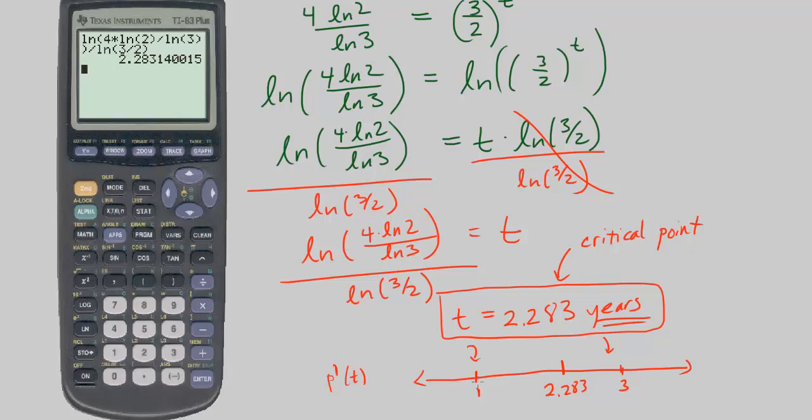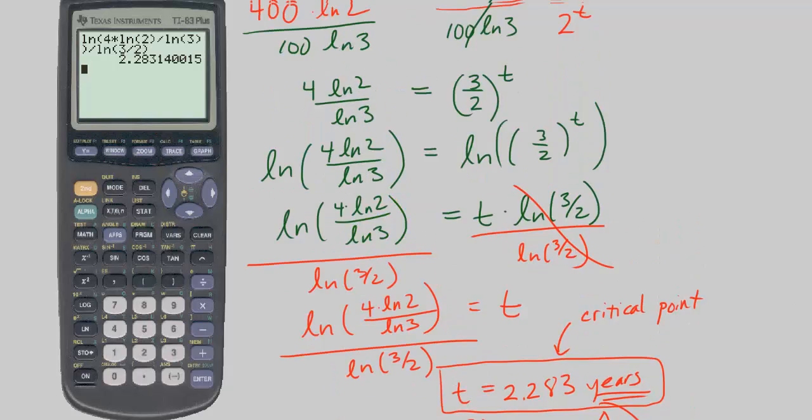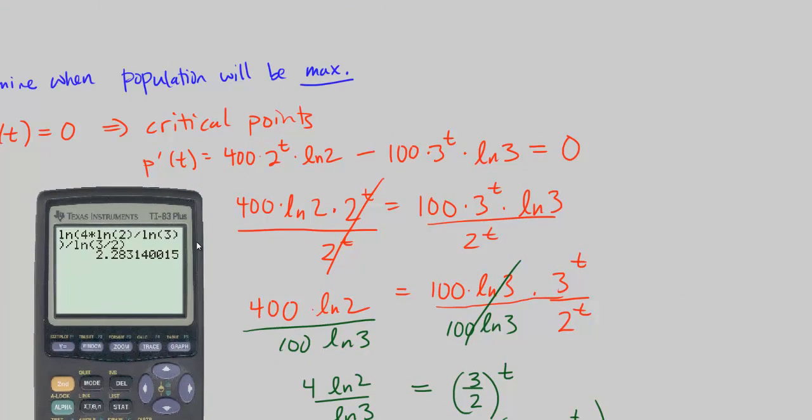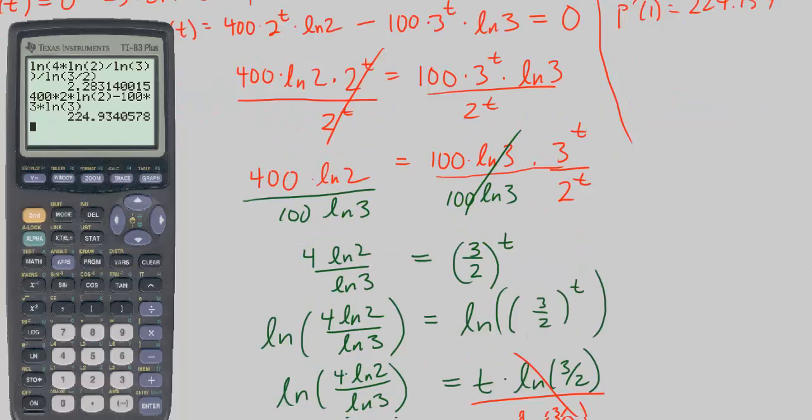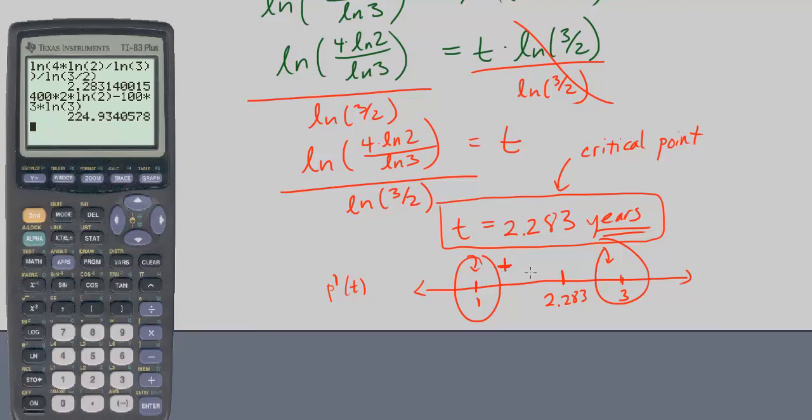So let's go ahead and test it out. p prime of t, so we need to check 1 and 3. So p prime of 1 is equal to what? Plug in 1 here, that's going to give us 400 times 2 to the power of 1 is just 2, times ln of 2, minus 100 times 3 to the power of 1, which is just 3, times ln of 3. This is going to give us 224.934. The important thing though isn't that value as much as we know it's positive. So positive means increasing for our derivative. Positive derivative means p is increasing.